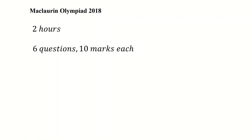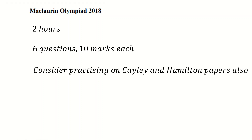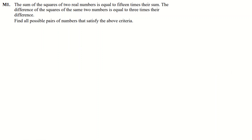This is the McLaurin Olympiad 2018. It's two hours long, six questions, ten marks each. All the working is marked — it's not multiple choice, you don't just provide answers. Consider practicing on the Cayley and Hamilton papers, although they're just a little bit easier but the same kind of idea. Anyway, question number one.